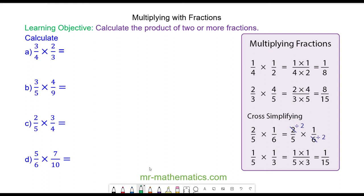Hello and welcome to our lesson on multiplying with fractions. We're going to multiply three quarters by two thirds. To do this we're going to use cross-simplifying, which means you look for a factor in the numerator of one fraction and the denominator of the other. You can see that three is a common factor of both.